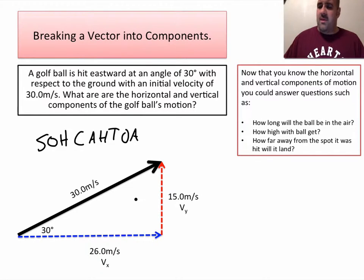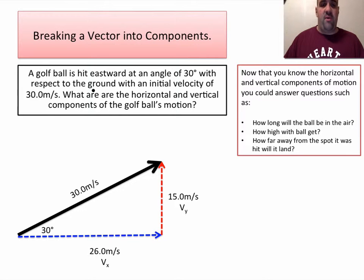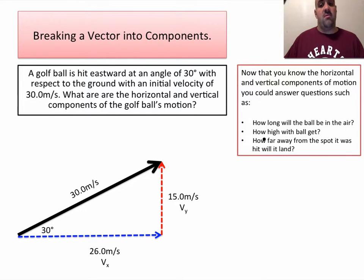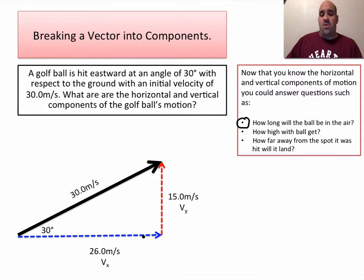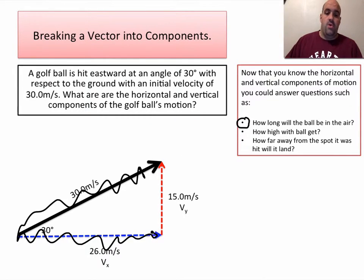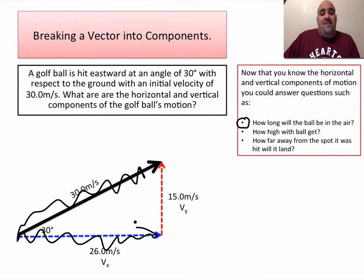Why do we break a vector into components? So we can answer questions about the motion of projectiles. With this golf ball hit at 30 degrees at 30 meters per second, now that we know the horizontal and vertical components, we can answer: How long will the golf ball be in the air? How high will it get? How far from the spot it was hit will it land? The x component has nothing to do with the vertical free-fall motion, so you can treat this like an isolated free-fall problem — just throw a ball straight up at 15 meters per second.